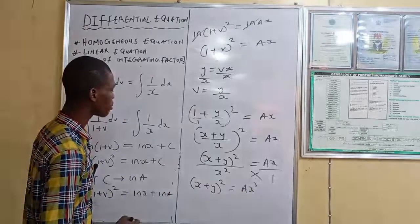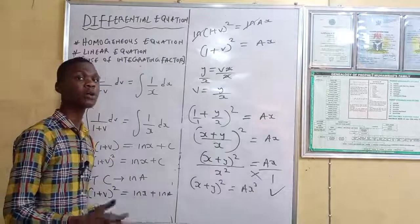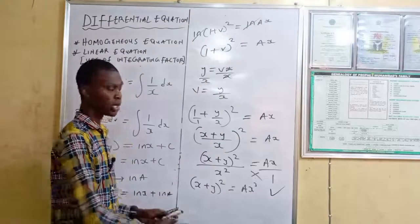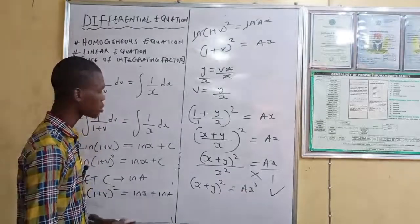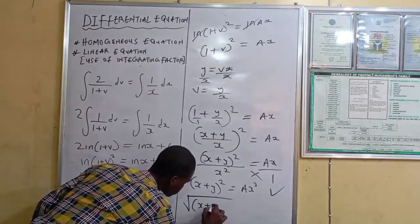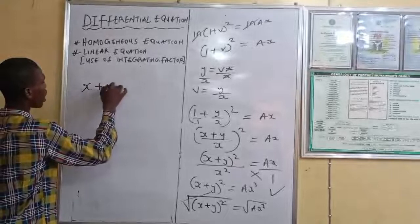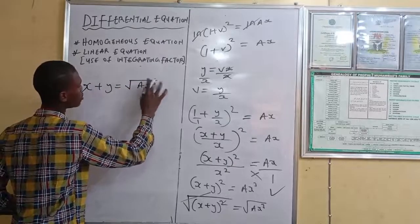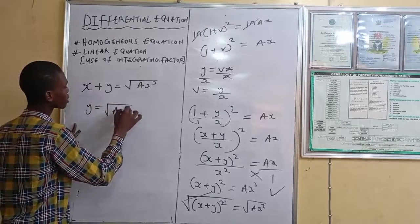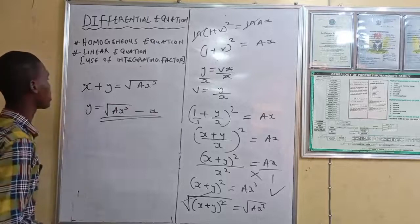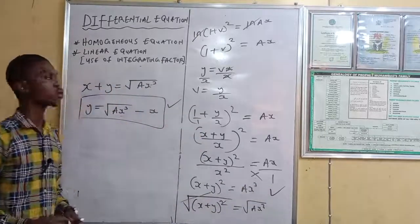To get y explicitly, take the square root of both sides: x + y equals the square root of ax³. Therefore y equals the square root of ax³ minus x. This is the final answer. Note: you may stop at (x + y)² = ax³ — that form is also correct. Both stopping points are acceptable.